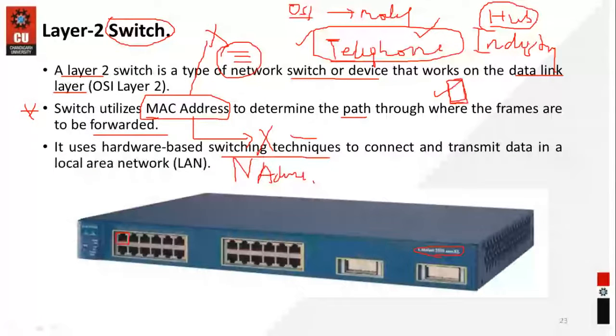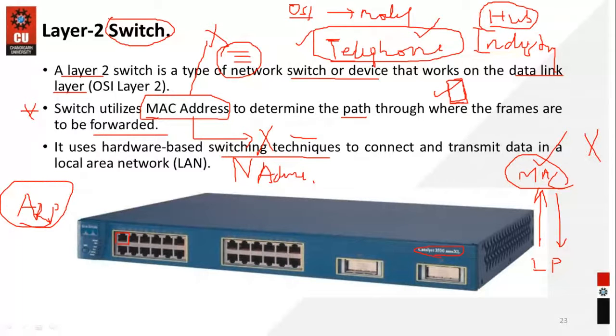If someone blocks your MAC address, you will not be able to use any services of that particular network. For example, in Chandigarh University, if I find out your MAC address, I can block it. There is translation between the MAC and IP address - MAC is the physical address and IP is the logical address. There is a special dedicated protocol, ARP (Address Resolution Protocol), that handles this. If someone blocks your MAC, you won't be able to use any service of that particular network.